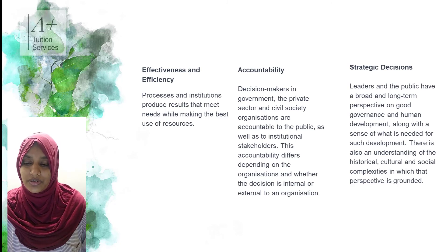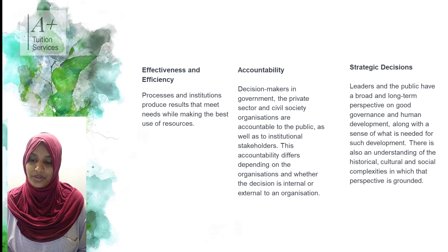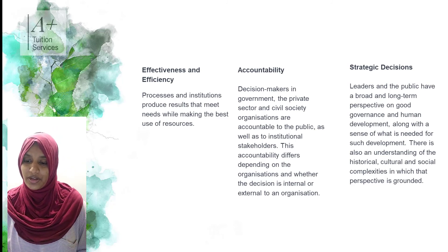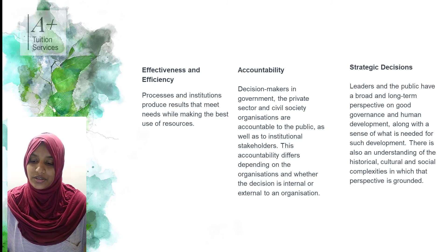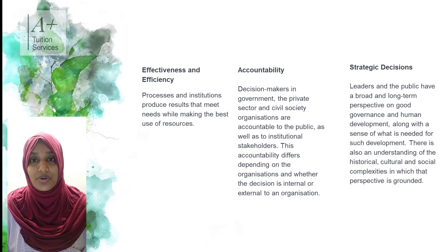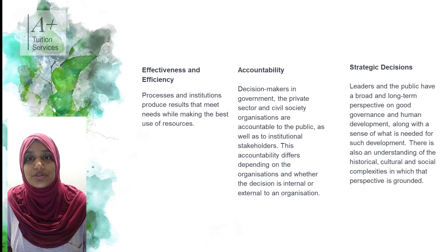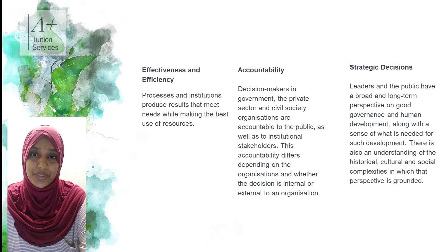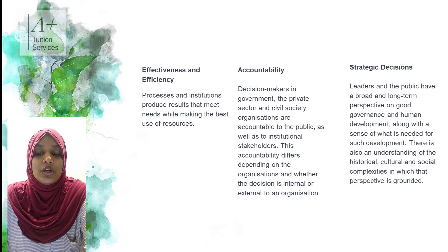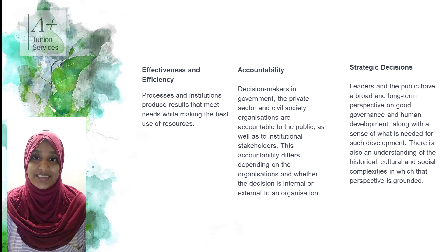The last characteristic of good governance is strategic decision-making. Leaders and the public have a broad, long-term perspective on good governance and human development, along with a sense of what is needed for such development. There is also an understanding of historical, cultural, and social complexities in which that perspective is grounded. Strategic decision-making means you align what you do with the mission and goals you are set out to achieve, think strategically, fulfill your promises as a government, and ensure resources are evenly distributed. This takes us to the end of this lesson - it was a long one with a lot of information, and I encourage you to pause and take notes.